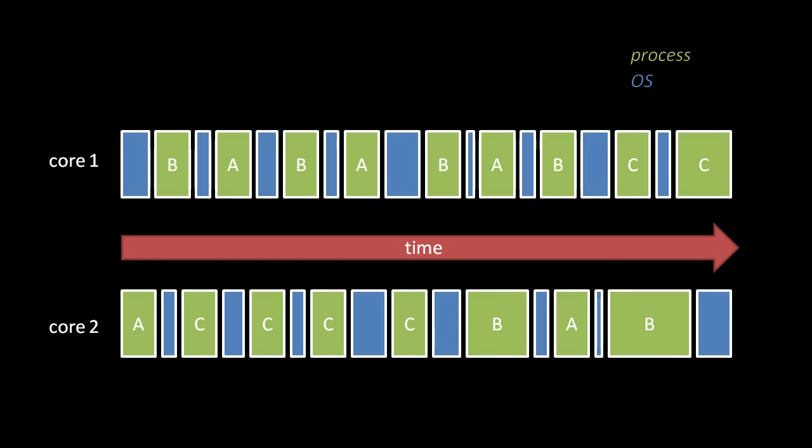So, if we have two CPU cores and three open processes A, B, and C, notice that each process only runs on one core at a time. At no point does, say, process B run simultaneously on both of the two cores. Also, notice that OS code always runs on each core in between each process.